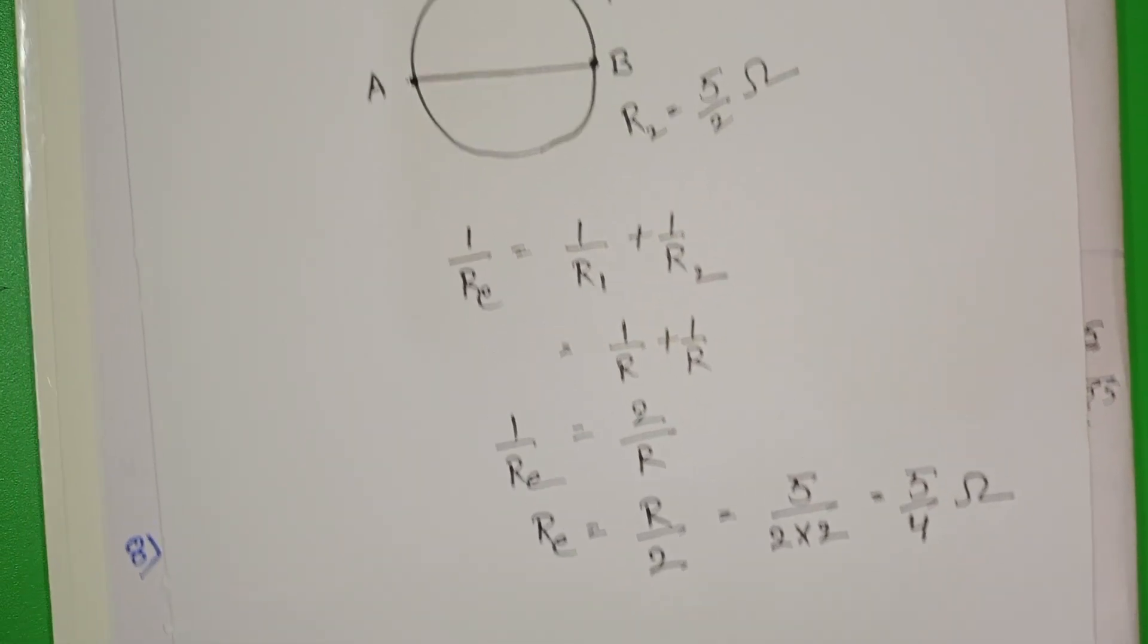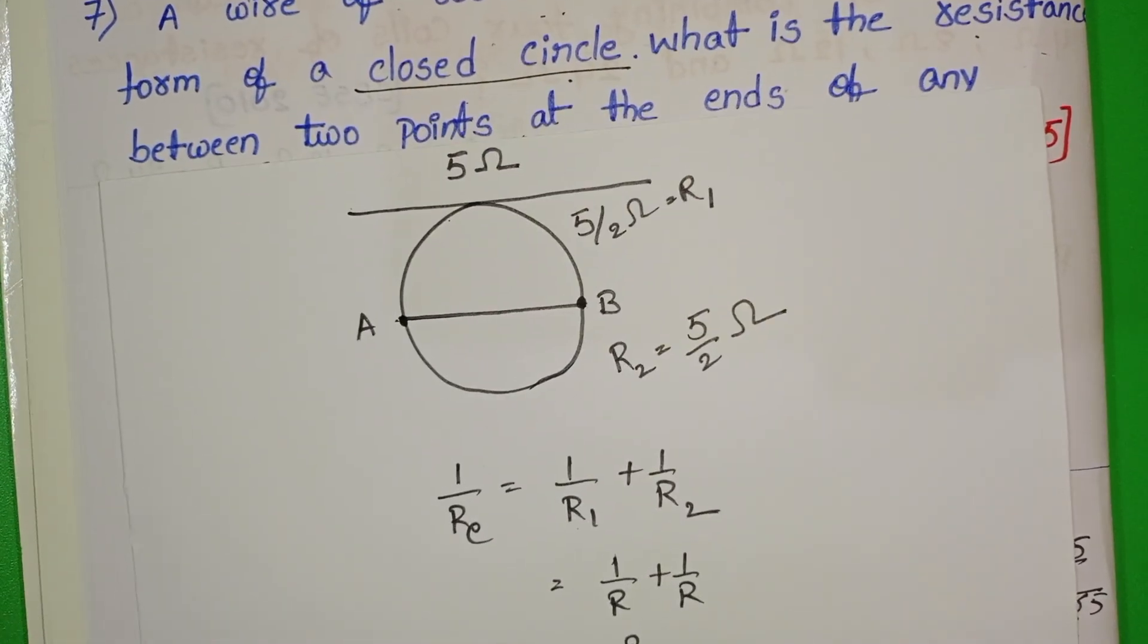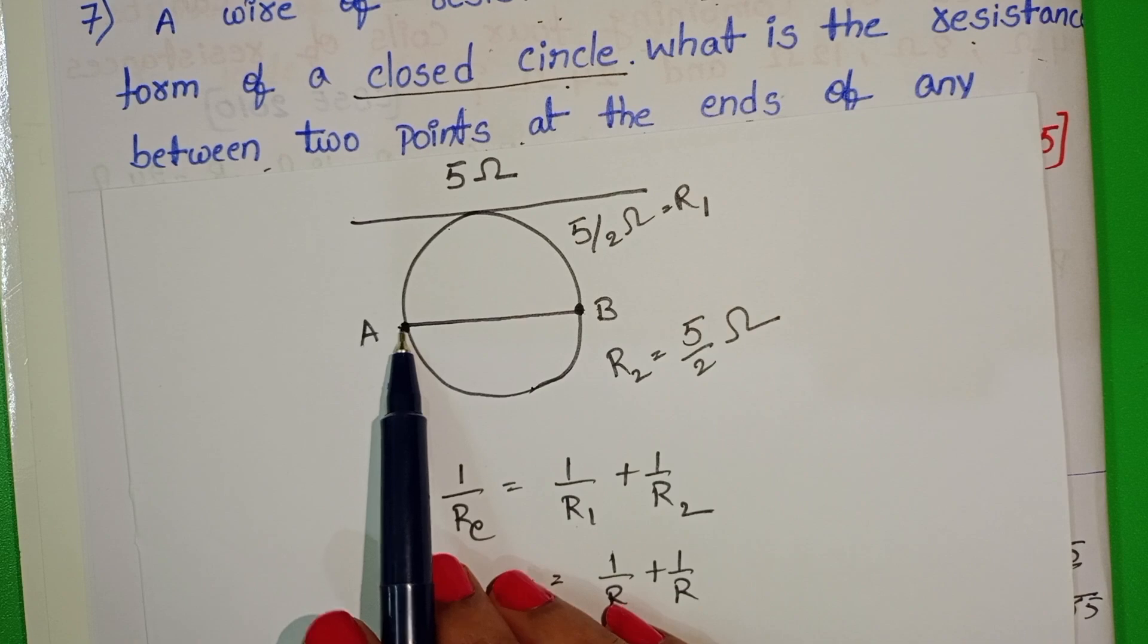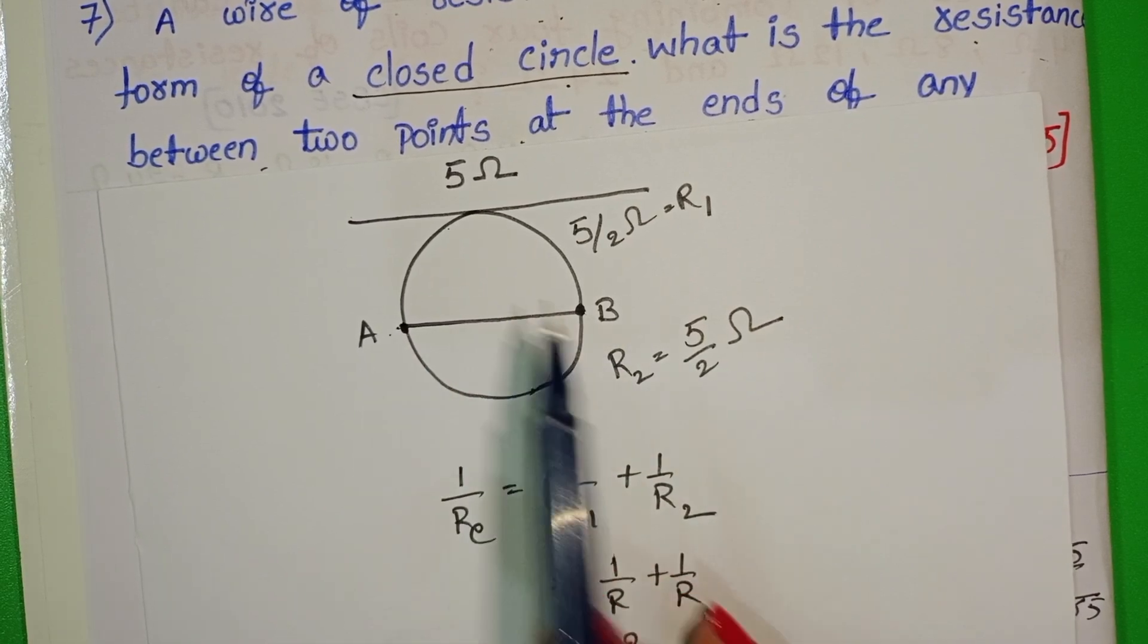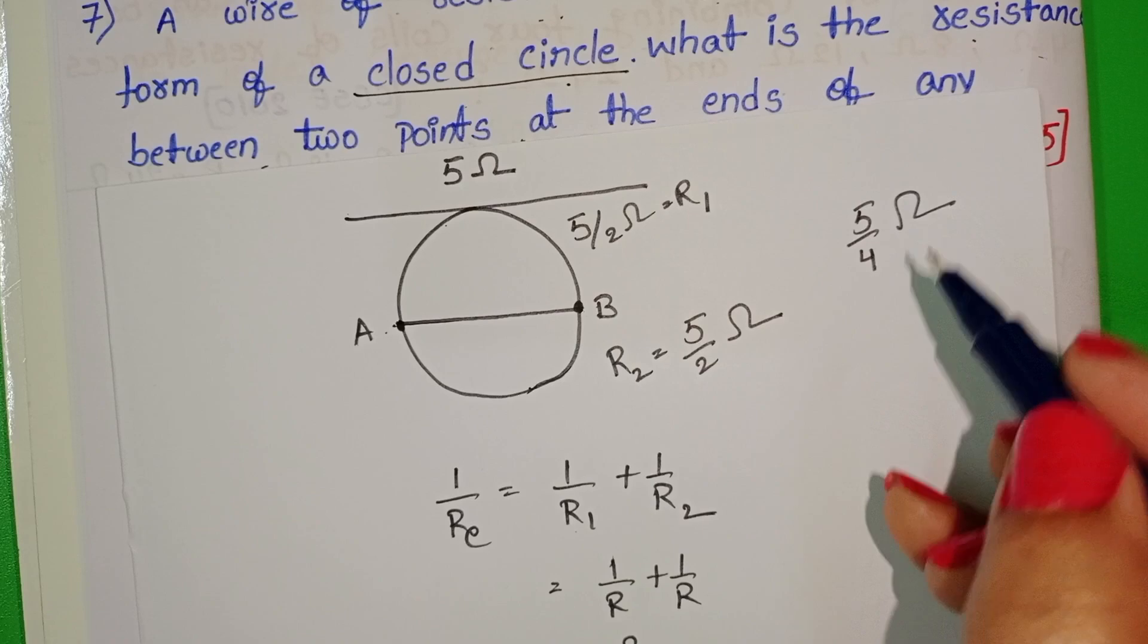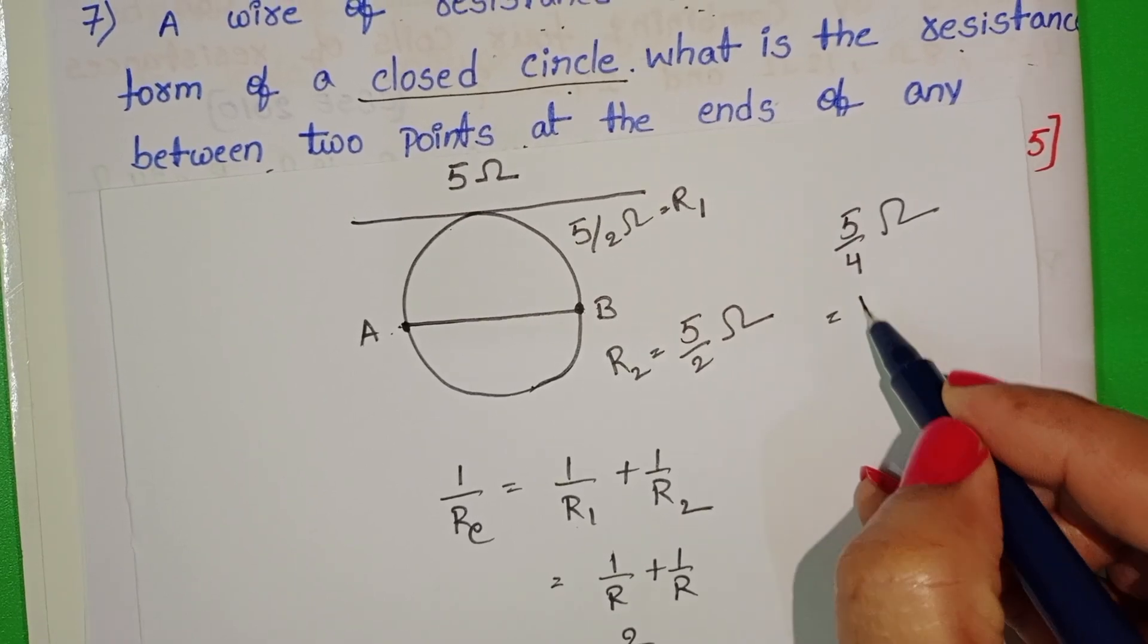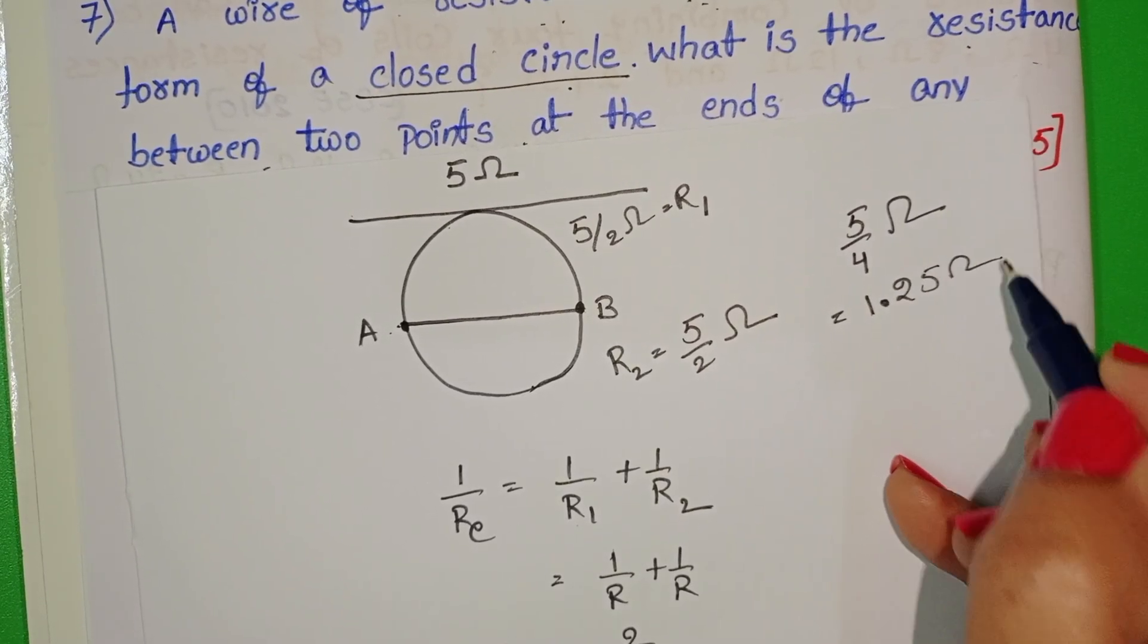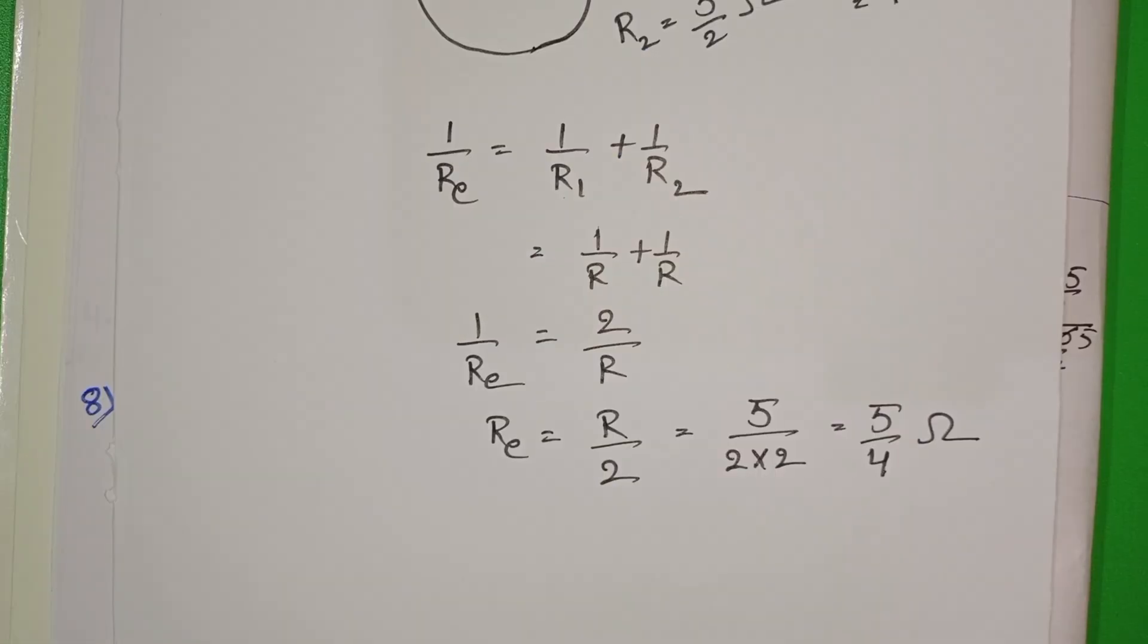Equivalent resistance of the given wire when it is bent in the form of a circle between the two points A and B is 5 by 4 ohm, or in decimal form 1.25 ohm.